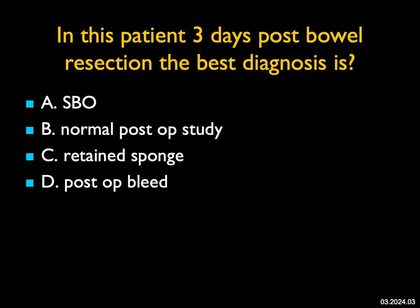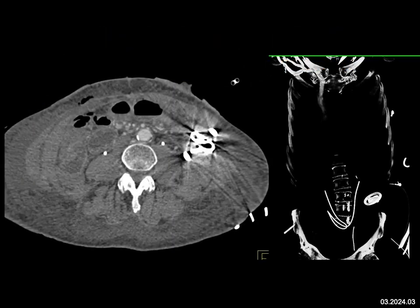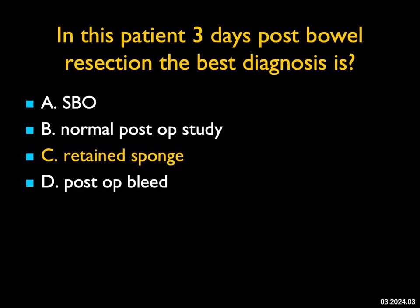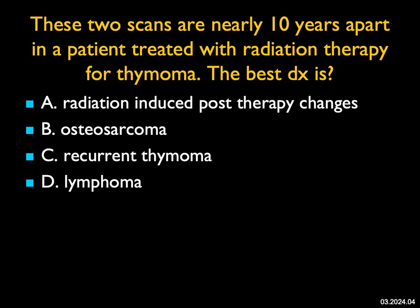In this patient three days post bowel resection, the best diagnosis: I don't see a small bowel obstruction, and it's obviously not a normal post-op study. I don't see a bleed, but I see what looks like some foreign matter — high-density material — in the left lower quadrant. On the MIP coronal or MIP topogram you can see some drains in place, but in the left lower quadrant there's high-density material. This is a retained sponge. Retained sponges still occur and the radiologist needs to recognize it; the patient required a second surgery.